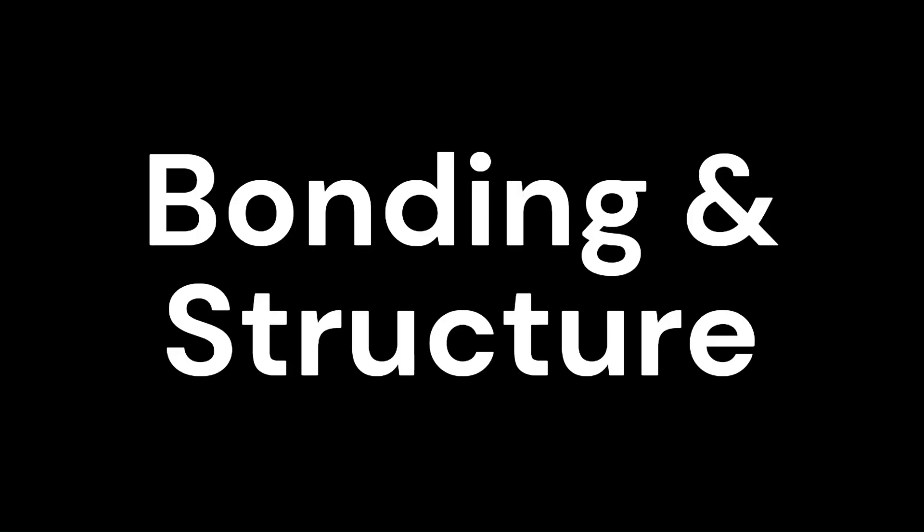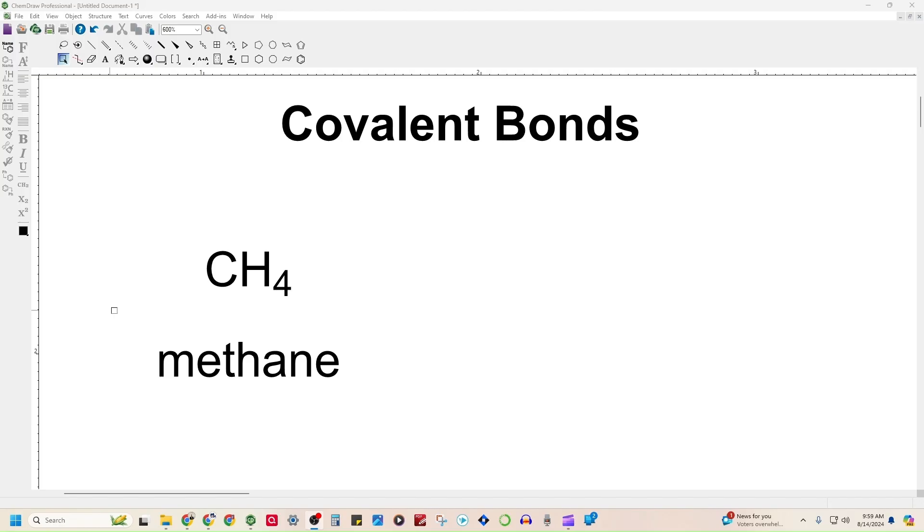Level 2. Bonding and Structure. These organic molecules are held together by covalent bonds, where electrons are shared between atoms. These single lines represent covalent bonds, and breaking them up, you can see the electrons between them being shared.